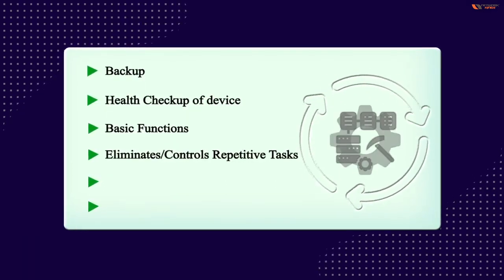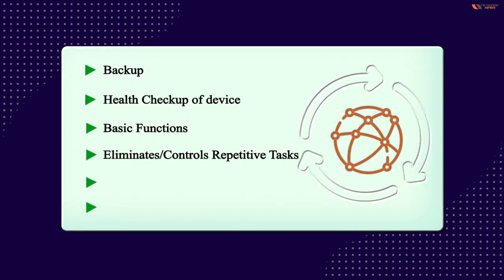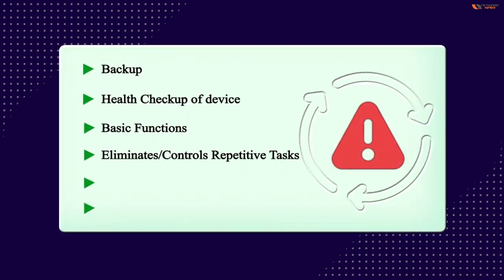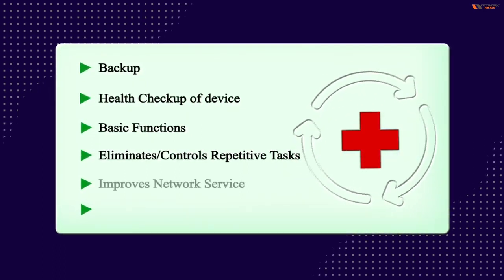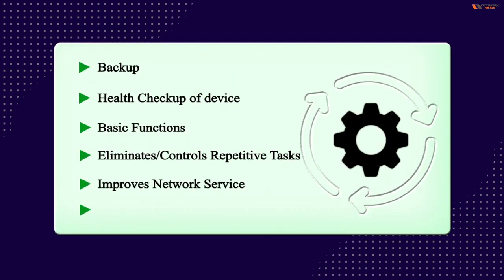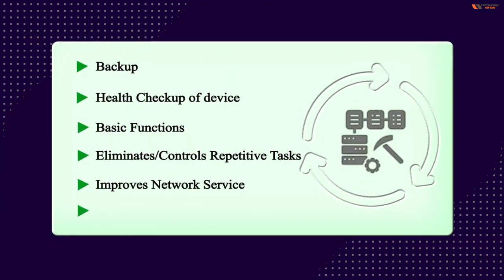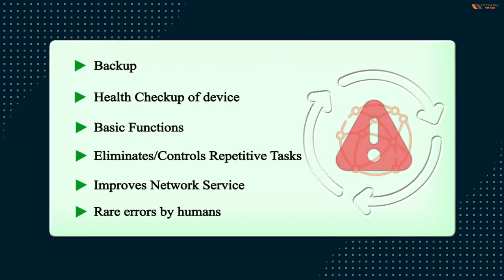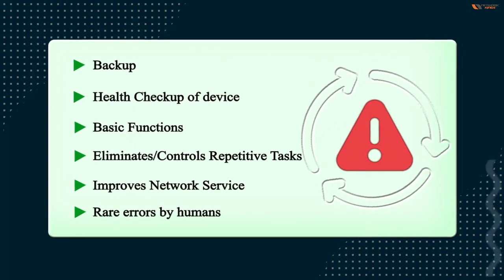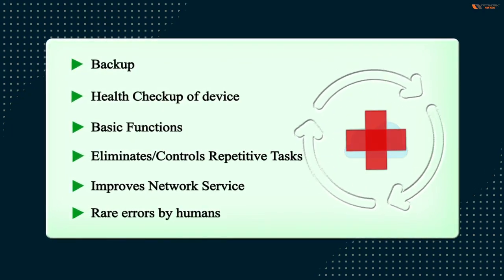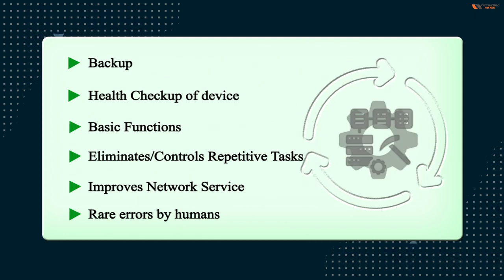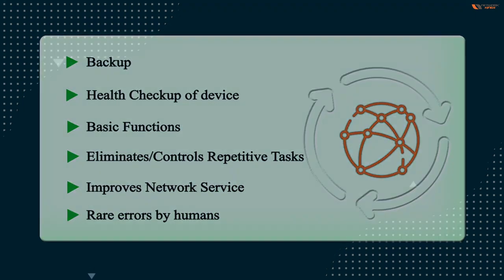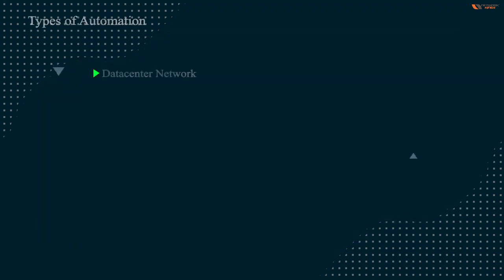Repetitive tasks will be eliminated or controlled, and it will also improve network service. Most network issues come from human errors. When you are doing automation, it is rare that humans will make mistakes.